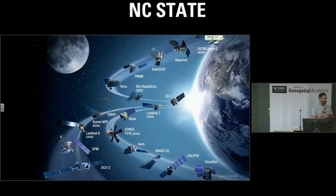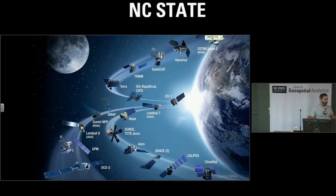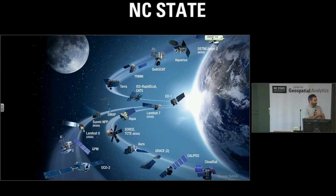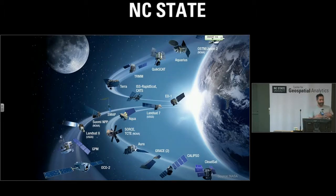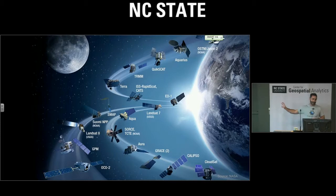Forty-plus years of satellite imagery from a whole constellation of sensors from different space agencies around the world. The problem is that these data are still relatively inaccessible, especially to organizations that don't have access to computing resources. You've got to download all this stuff — you need a high-bandwidth internet connection, somewhere to store it (a big pile of hard disks), and lots of compute power to process and visualize it. If any one of those pieces is missing, these data are relatively inaccessible for a lot of folks.